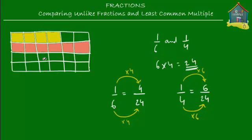Now the question is: must we cut it into 24 pieces, or can we cut it into fewer pieces and still mark one-sixth and one-fourth on the lasagna? The answer is yes, you can cut it into fewer pieces. The next method is called the least common multiple method, which finds another number instead of 24.